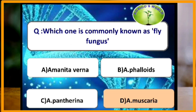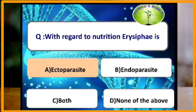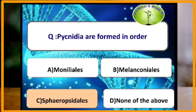Amanita muscaria is known as the fly fungus or fly agaric. With regard to nutrition, Erysiphe usually causes powdery mildew and is an ectoparasite. Pycnidia are formed in the order Sphaeropsidales.